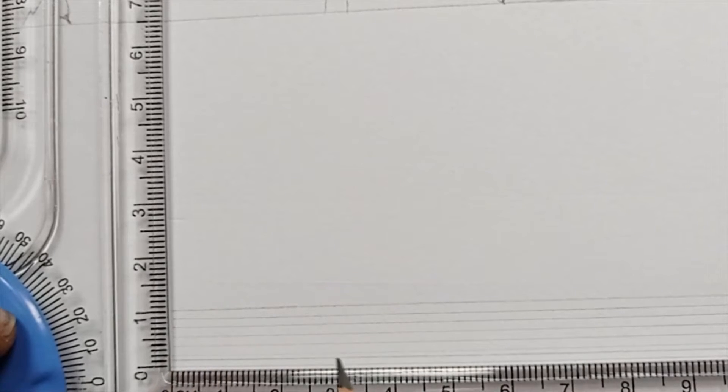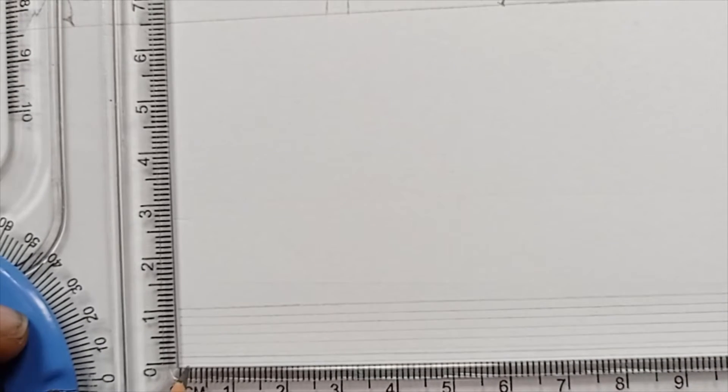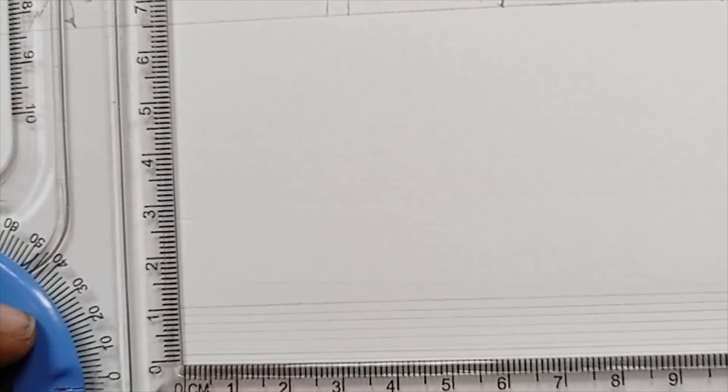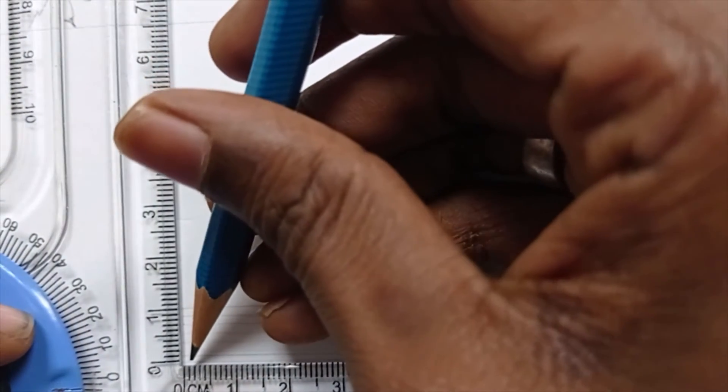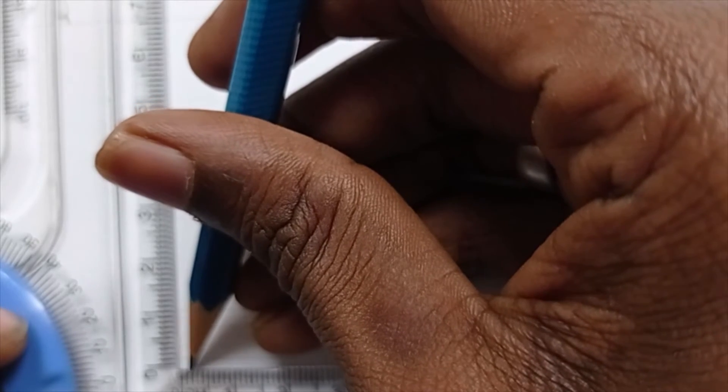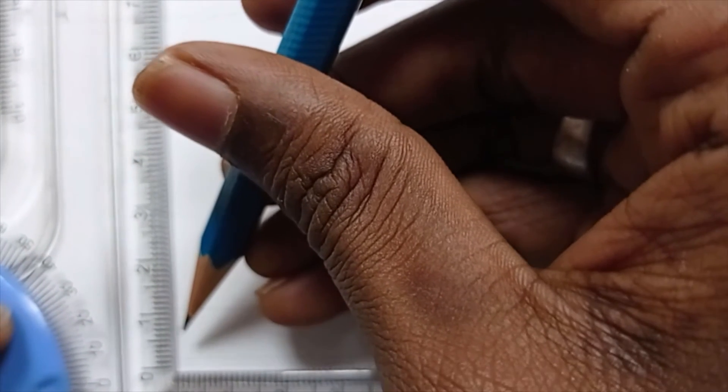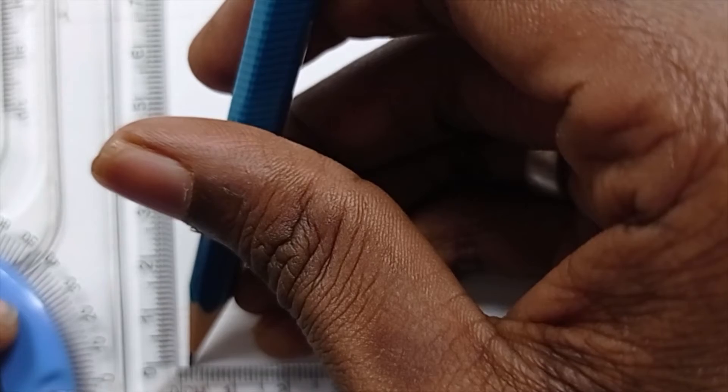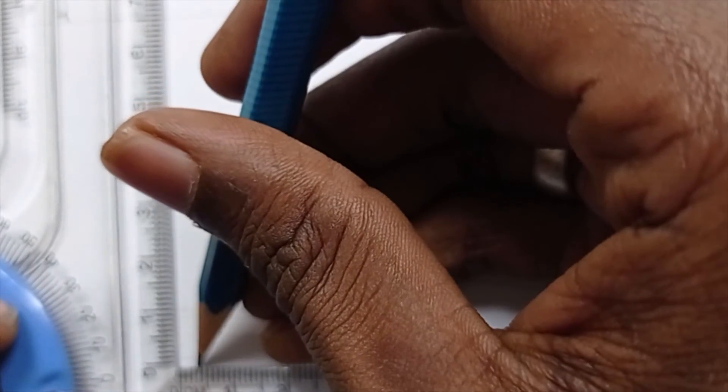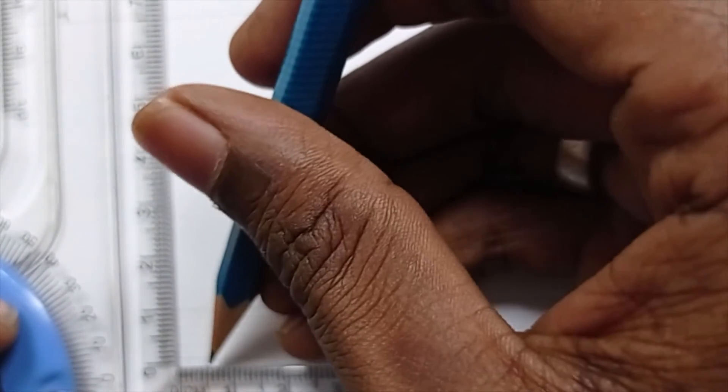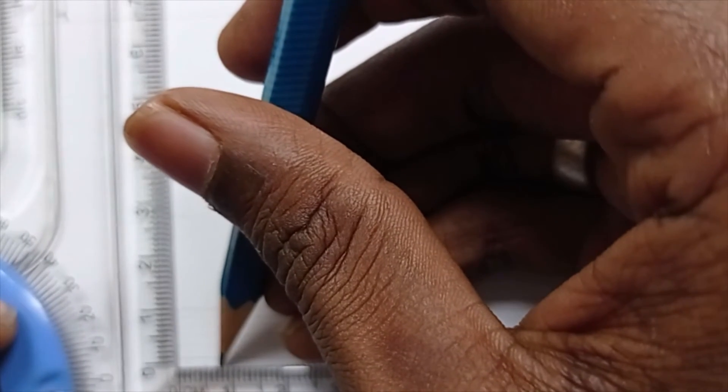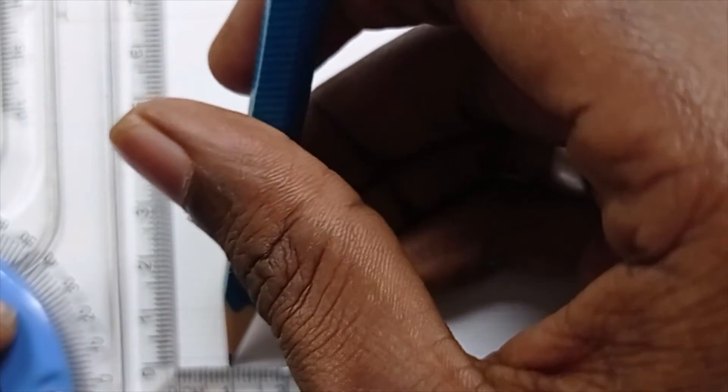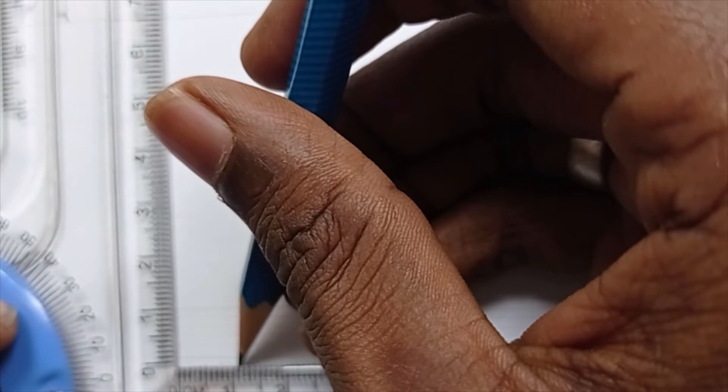This is also again going to be 1.5. Now what you do is just make the marking at 1.5. 1.5, 3, 4.5, 6, 7.5, 9, 10.5, 12, 13.5, 15.